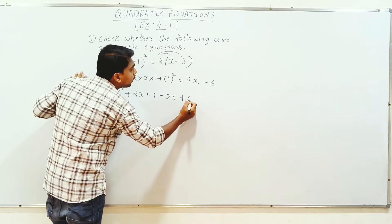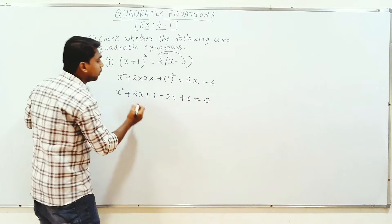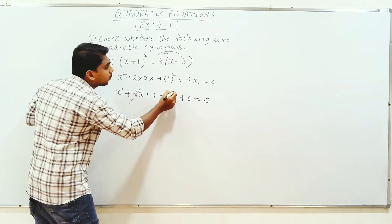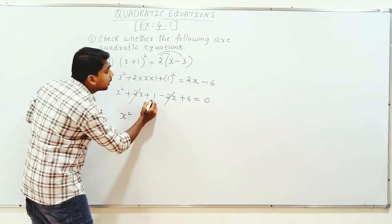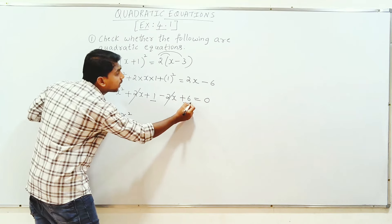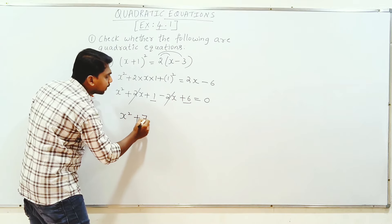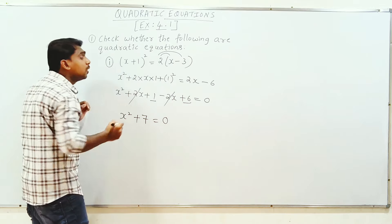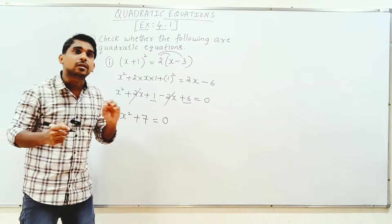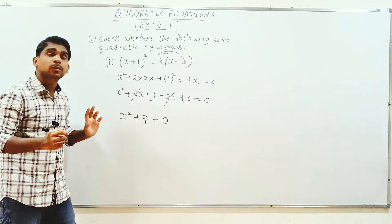Plus 2x minus 2x cancel. X square, plus 1 plus 6. X square plus 6 plus 1, 7 is equal to 0. Highest power is 2. That is quadratic equation.